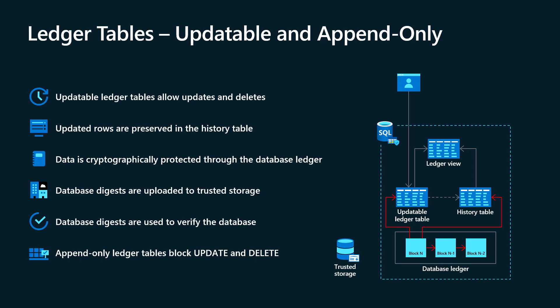Trusted storage is an Azure storage account with immutability settings switched on, or we also have another service called Azure Confidential Ledger. It becomes interesting because an external party — like an auditor, a regulator, or somebody else — can run a verification procedure. We're going to fetch the digest from the digest storage and in real time recalculate the same hash inside the database, then match these two hashes. If we have a match, we have cryptographic proof that the data has not been tampered with and can be fully trusted. If the hashes do not match, we also have proof that somebody has actually tampered with the data, and you can see that in the return of the procedure.